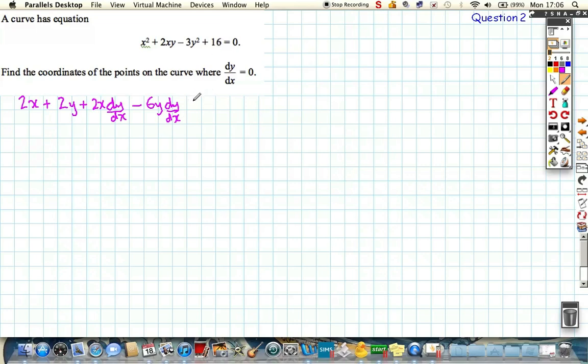16 differentiates to 0, and on the right hand side, 0 also differentiates to 0. So if we go through and collect all the terms together, if we collect 2x plus 2y on this side, and we move dy/dx all on to the other side, and factorise, we get dy/dx is plus 6y, because we've changed sides, minus 2x.